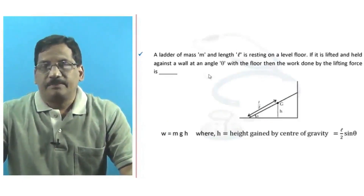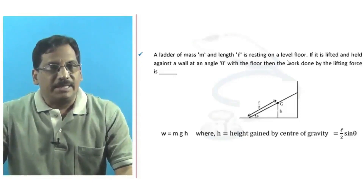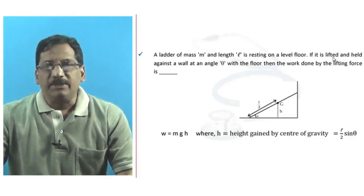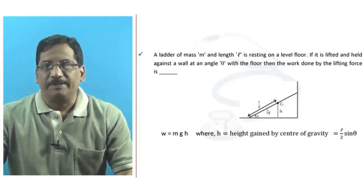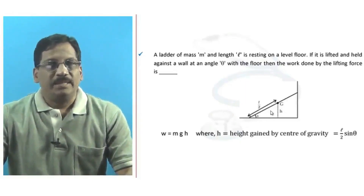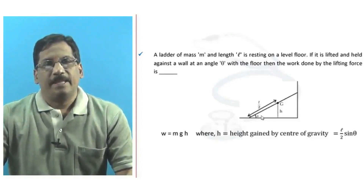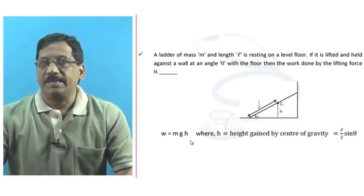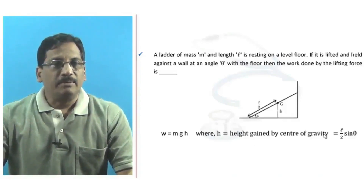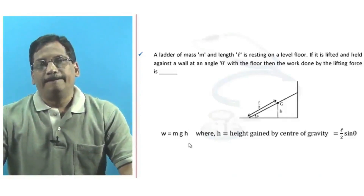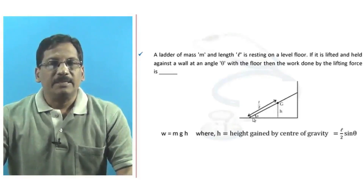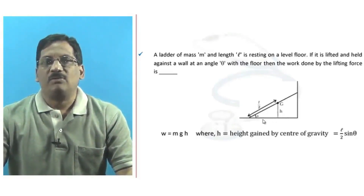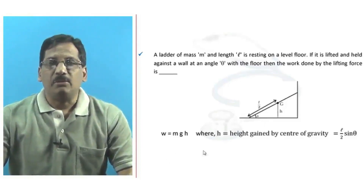Another context: a ladder of mass m and length l is resting on a level floor. If it is lifted and held against a wall at an angle theta with the floor, the work done by the lifting force is mg × h, where h is the height gained by the center of gravity — equal to mg × (l/2) sin theta. Here, sin theta = h / (l/2), therefore h = (l/2) sin theta, giving the formula W = mg × (l/2) sin theta.